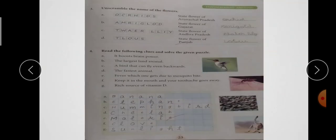Next है, ये page number 23. Third है - Unscramble the name of the flowers. की नीचे कुछ flowers के name दिये गए हैं. Letters को rearrange करना है. A है - State flower of Arunachal Pradesh. तो कौन सा है flower Orchid? B है - State flower of Gujarat. तो कौन सा name है? Marigold. C है - State flower of Andhra Pradesh. तो Andhra Pradesh का जो state flower है, वो कौन सा है? Water Lily. और D है - State flower of Punjab. That is Lotus.